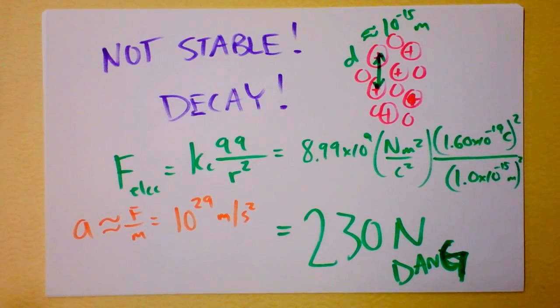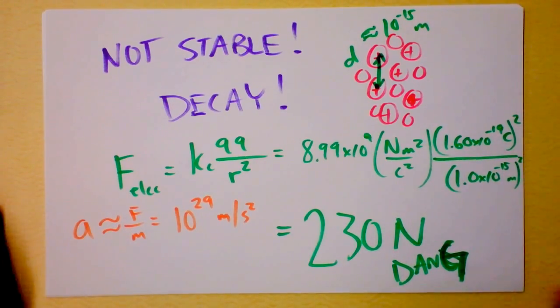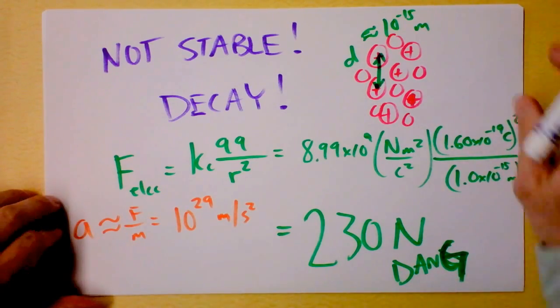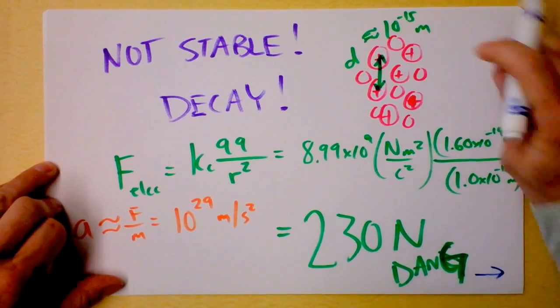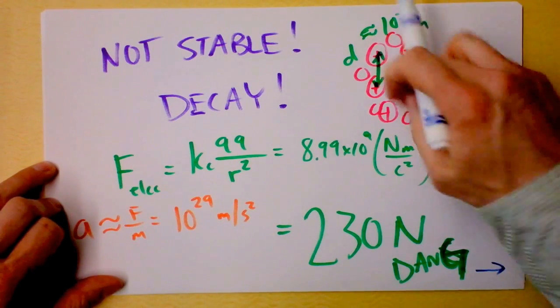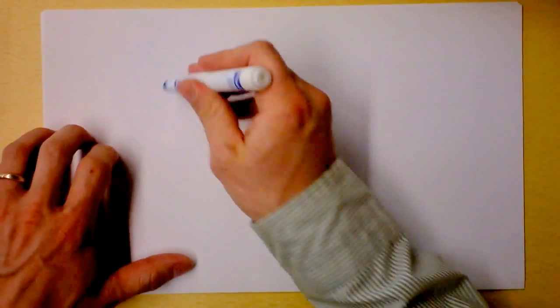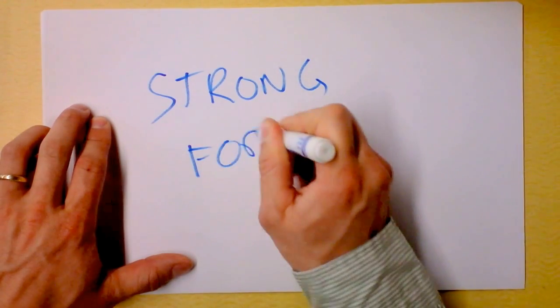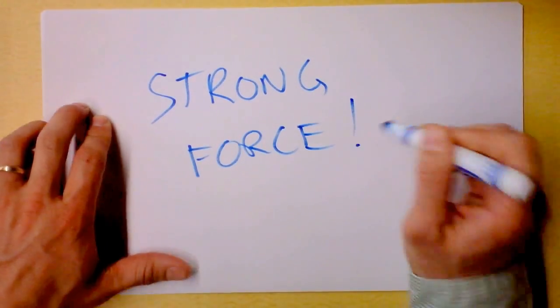But instead, there must be another force, and that force must be really strong. So guess what we're going to call it. You ready? Here we go. What we're going to call this really strong force that must be holding the nucleus together. Leave it to physicists to have creative names. Later!